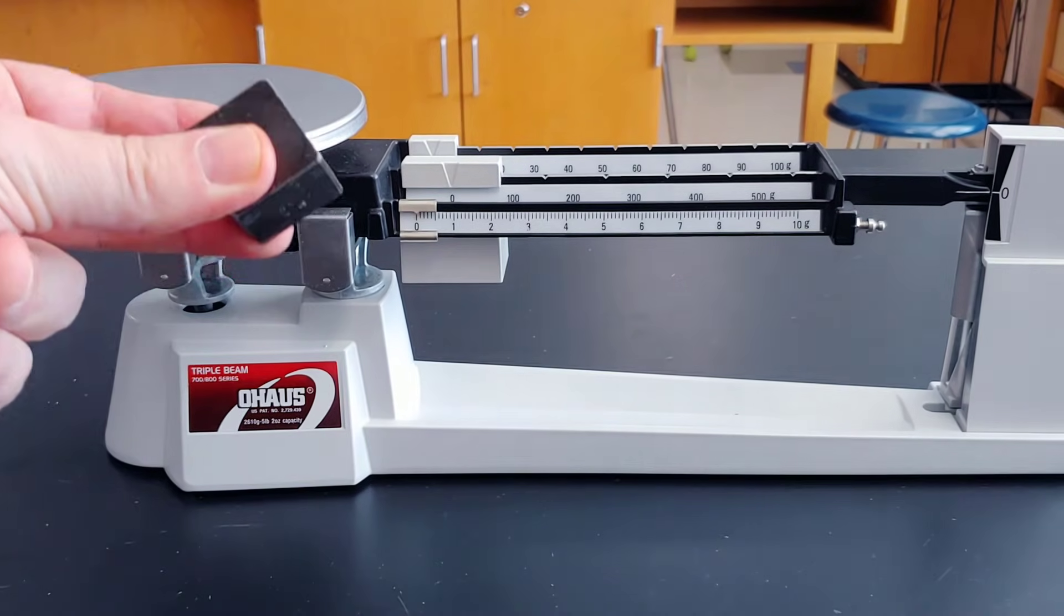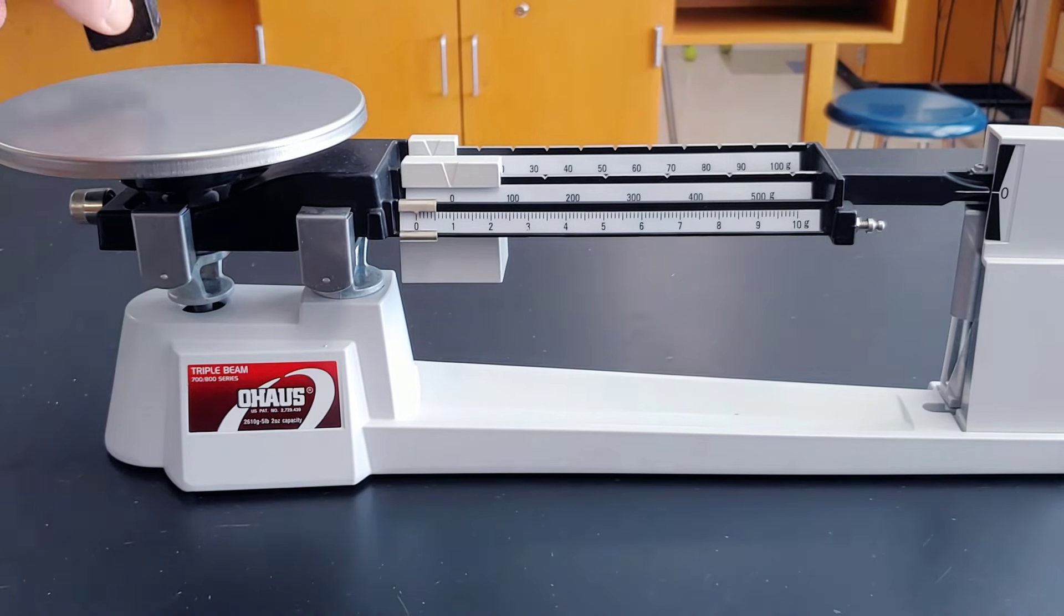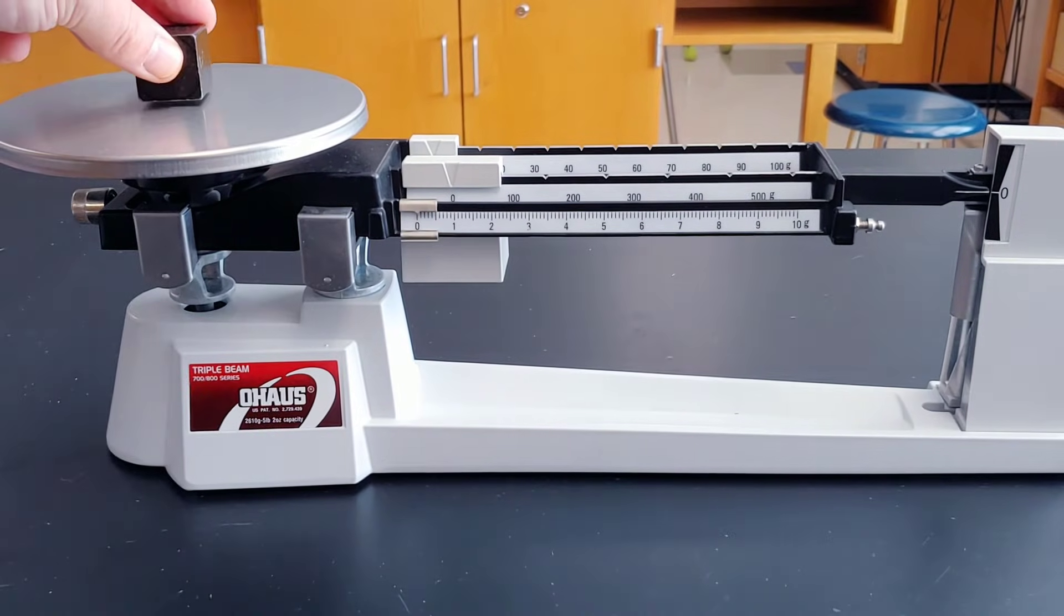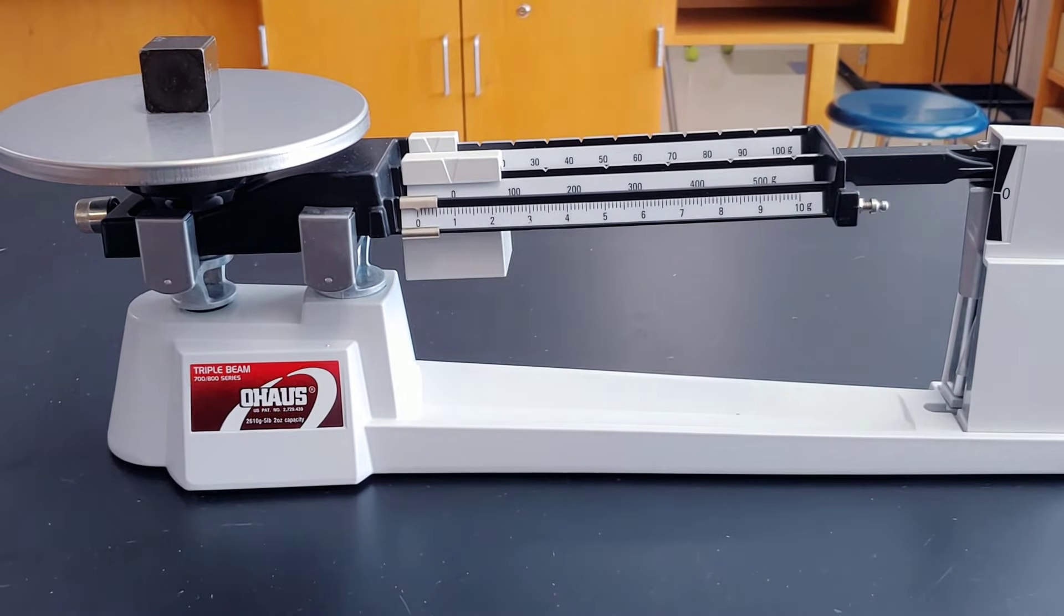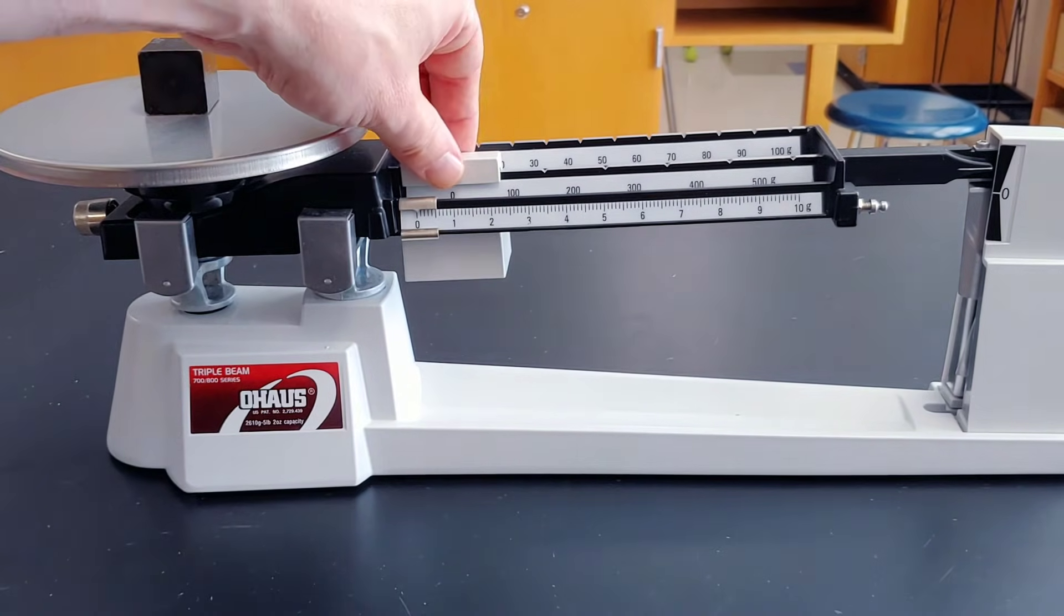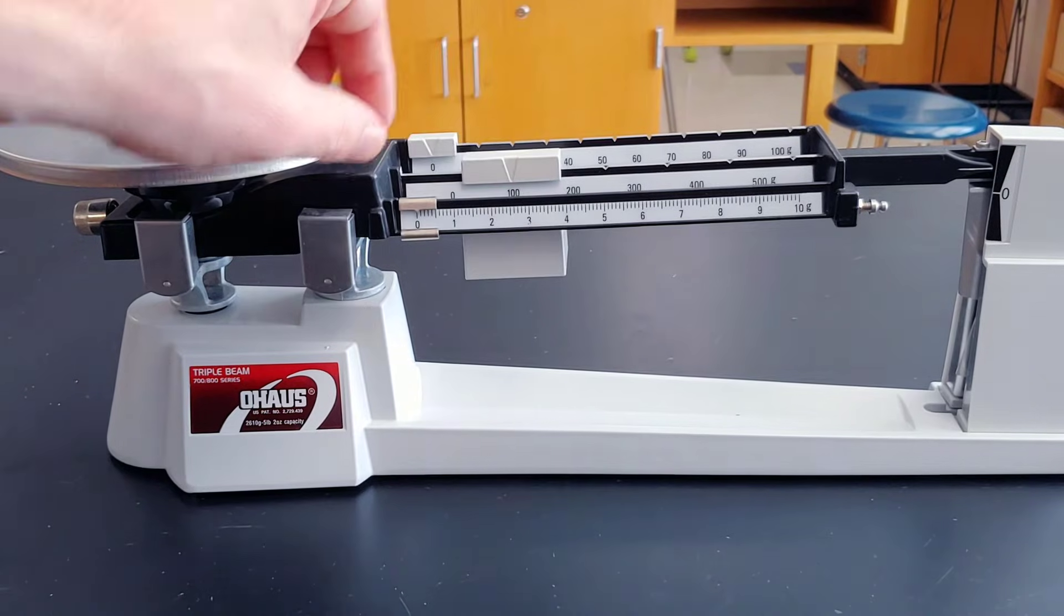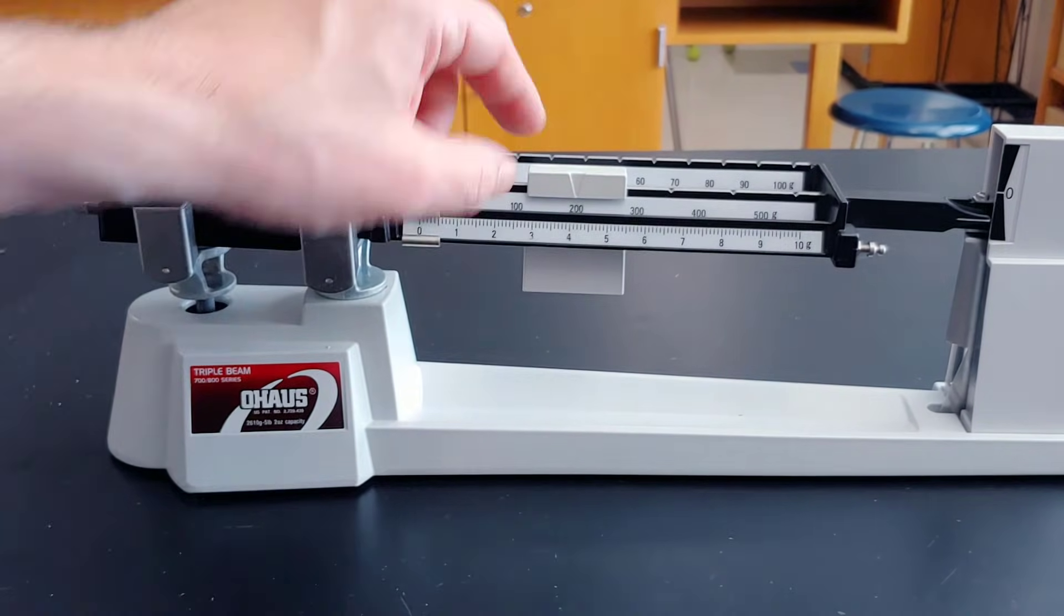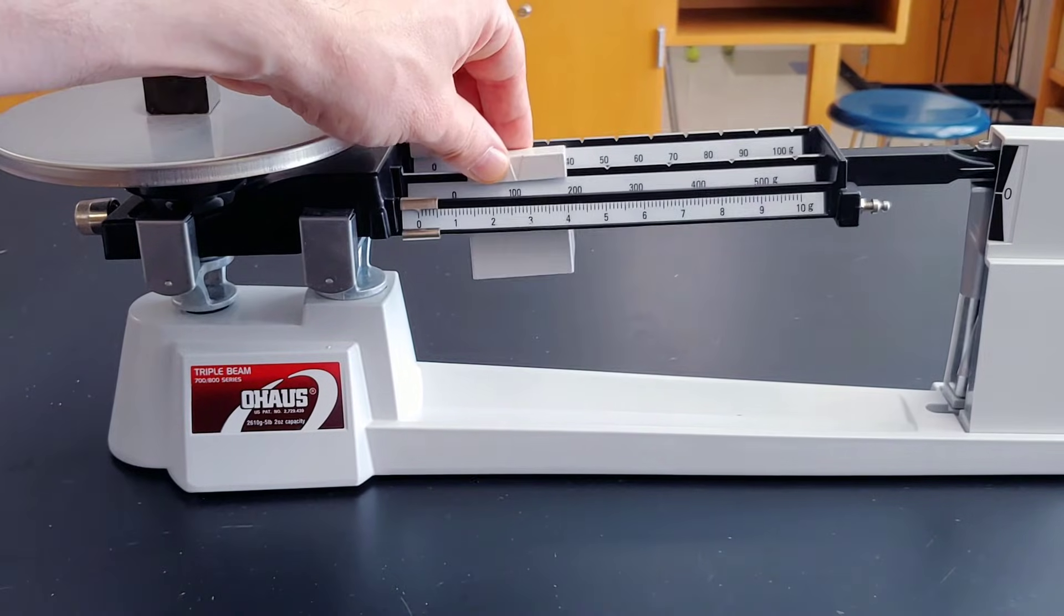Let's measure the mass of this iron cube. We'll begin by making sure it's all zeroed, and we'll place the cube in the middle of the pan. Now we begin with the heaviest arm first. We're going to move it over into that notch. Didn't go down. Over into the notch. And it went down, so we're going to go back to that hundred.